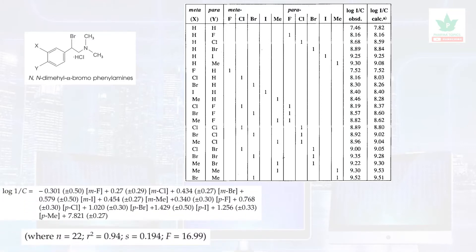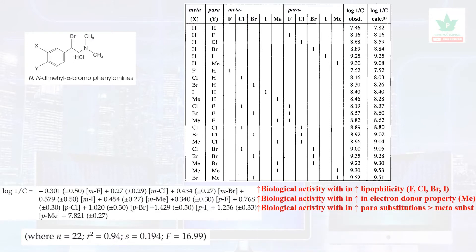Let us take an example: a series of 22 compounds where substitutions are taken into consideration. This model has a good R-squared value of 0.94. For every descriptor, a particular value is computed and fitted into an equation. They arrive at conclusions such as: biological activity increases with lipophilicity — for example, going from fluorine to chlorine to bromine to iodine, the activity increases. Biological activity also increases with electron donor capacity — for example, when a methyl group is substituted, it increases the activity. The biological activity at the para position is greater than the meta-substituent.